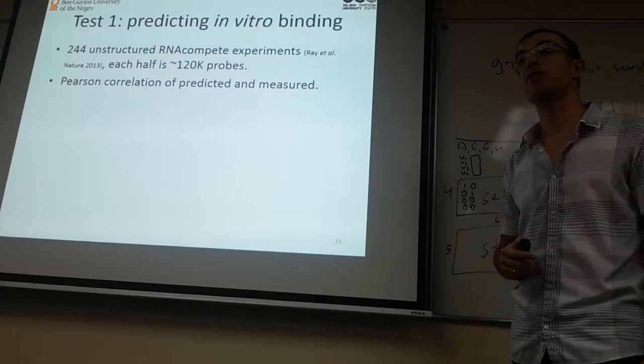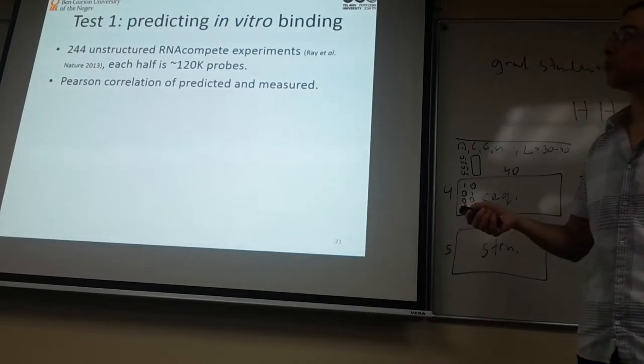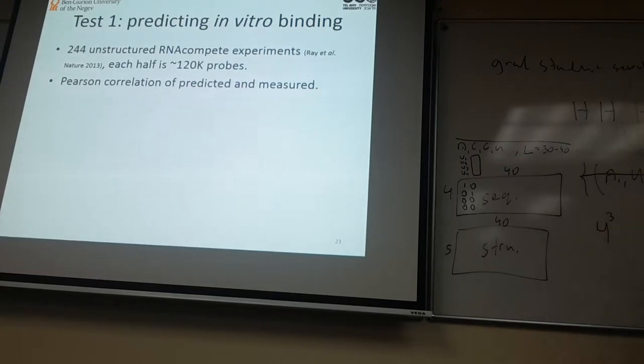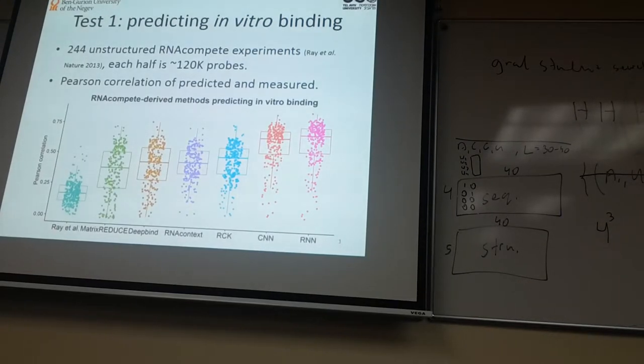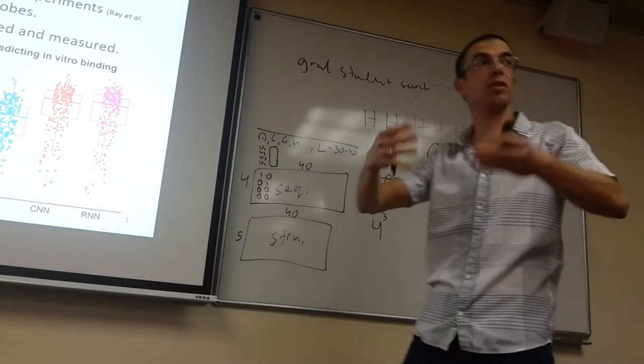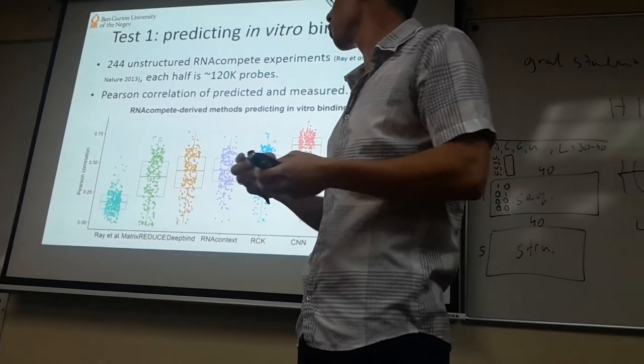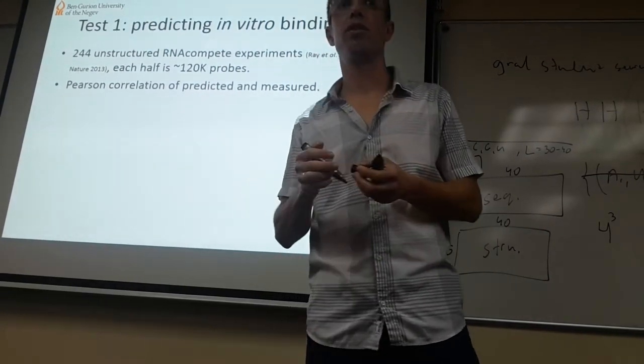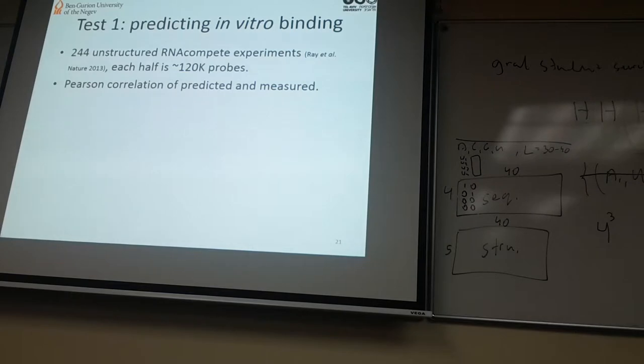The first test we did was to predict in vitro binding. We have 244 experiments, each experiment contains 240,000 probes. We can take half for train and half for test, and since we have numbers here x1 to x120k, we can predict the numbers here and compare the measured numbers to the ones we predict. Then we have two vectors of numbers and we want to see how well we found the real numbers. We use Pearson correlation to see how well we predicted these numbers, the binding intensities.